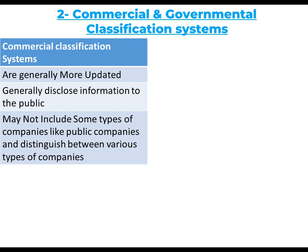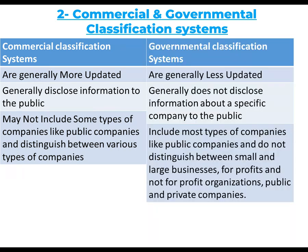Commercial classification systems are generally more updated, disclose information to the public, may not include some types of companies like public companies, and distinguish between various types of companies. Governmental classification systems are generally less updated, do not disclose information about specific companies to the public, but include most types of companies — including large and small businesses, profit and not-for-profit organizations, and public and private companies.